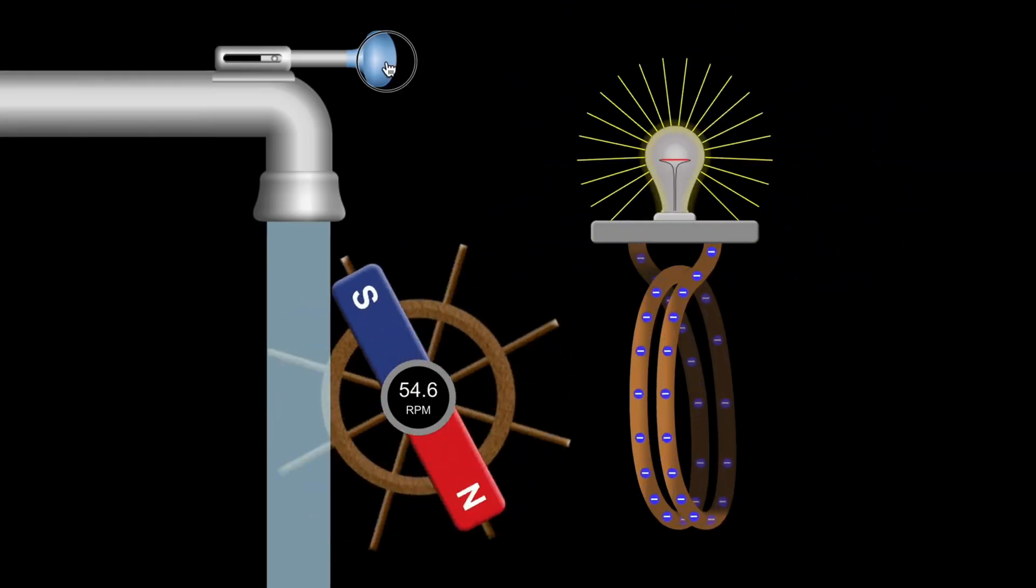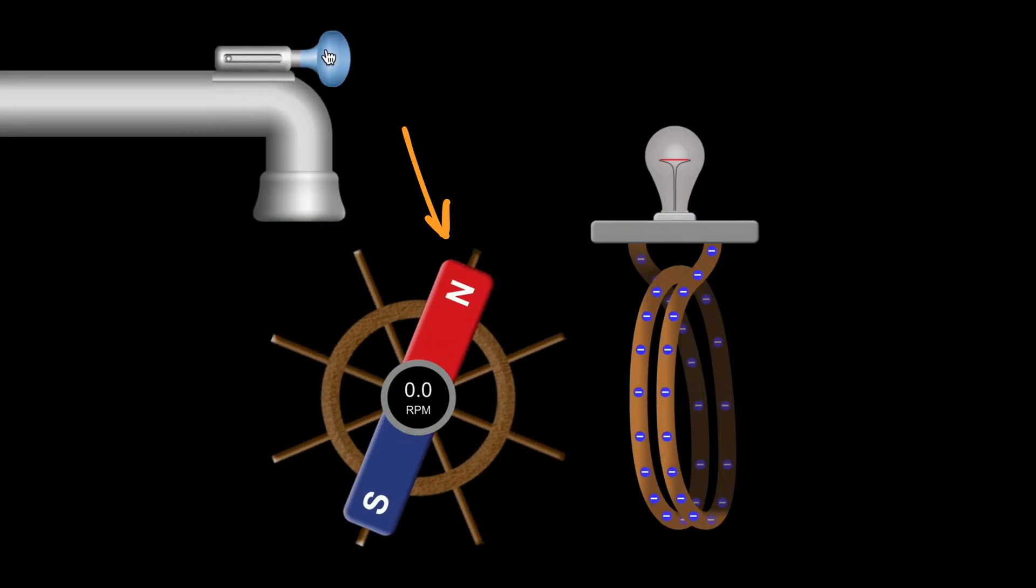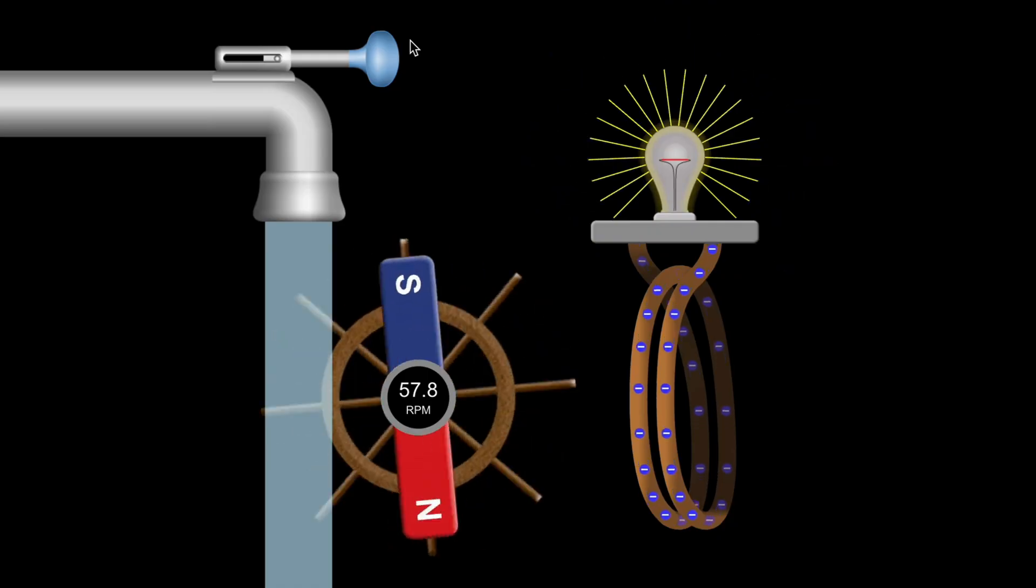But here, instead of a regular wheel, the turbine has a magnet attached to it, with a red side marked N, or North Pole, and a blue side marked S, or South Pole. This magnet is spinning as the wheel turns. We can even see the speed here in rotations per minute.